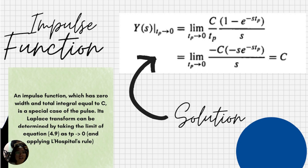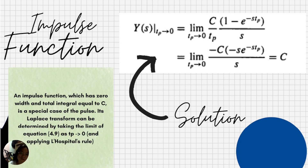For the impulse function, an impulse function which has zero width with a total integral equal to c is a special case. Its Laplace transform is determined by taking the limit as tp approaches zero and applying L'Hôpital's rule. The limit as tp approaches zero of c over tp times (1 minus e^(-s tp)) over s gives the result c.